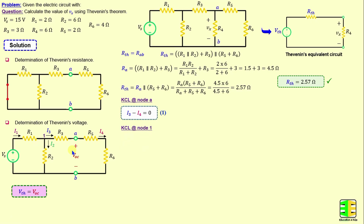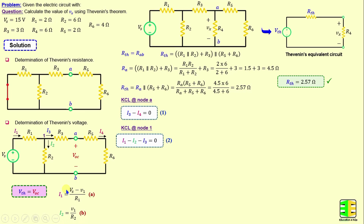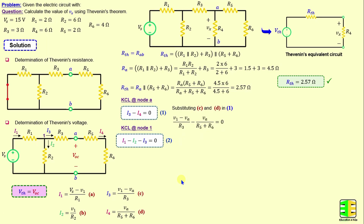Applying KCL at node 1 gives I1 − I2 − I3 = 0. According to Ohm's law: I1 = (Vs − V1) / R1, I2 = V1 / R2, I3 = (V1 − VA) / R3, and I4 = VA / (R5 + R6). Substituting equations C and D into equation 1 gives (V1 − VA) / R3 − VA / (R5 + R6) = 0.